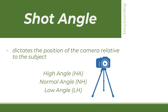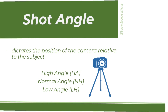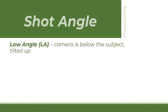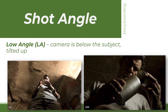The next important factor in storyboarding is to identify the three shot angles. Shot angles are important as they indicate meaning, emotions, and power in film. The first is the high angle wherein the subject appears small and weak, with head larger than normal size. High angle shot means that someone is being looked down, and it connotes strength to the viewer and weakness to the one being viewed.